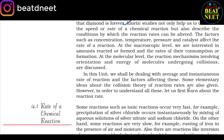Kinetic studies not only help us to determine the speed or rate of a chemical reaction but also describe the conditions by which the reaction rates can be altered. The factors such as concentration, temperature, pressure and catalyst affect the rate of reaction. At a macroscopic level, we are interested in amounts reacted or formed and the rates of their consumption or formation. At the molecular level, the reaction mechanism involving orientation and energy of molecules undergoing collisions is discussed. In this unit, we shall be dealing with the average and instantaneous rate of reaction and the factors affecting these. Some elementary ideas about the collision theory of reaction rates are also given.